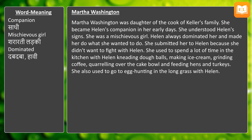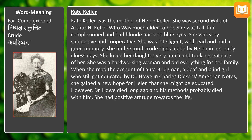Martha Washington was the daughter of the cook of the Keller family. She became Helen's companion in her early days and understood Helen's signs. She was a mischievous girl. Helen always dominated her and made her do what she wanted. She submitted to Helen because she didn't want to fight with her. She used to spend a lot of time in the kitchen with Helen, kneading dough balls, making ice cream, grinding coffee, quarreling over the cake bowl, and feeding hens and turkeys.